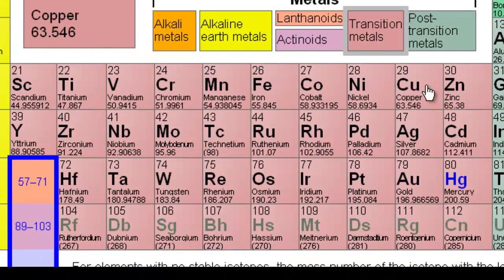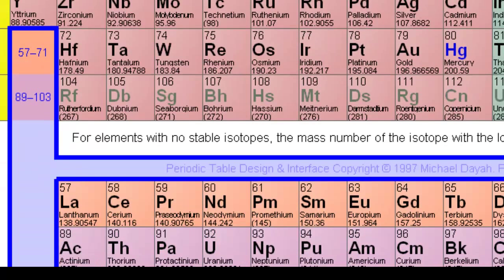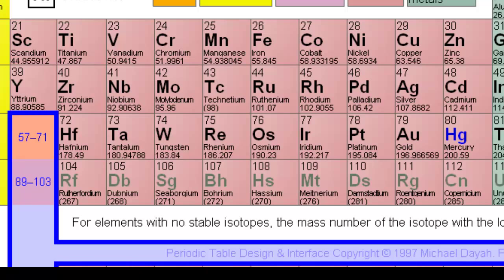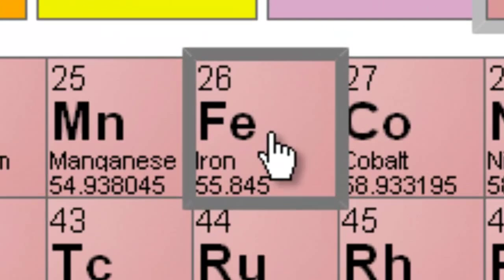So many of these metals here in the transition area and the inner transition area require a Roman numeral in the name. That is because these metals can exist in different charge states. For example, iron can exist as iron 3 or iron 2.